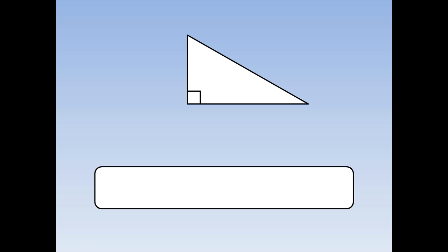Now let's look at different parts of a triangle. The length along the bottom is called the base. How tall it is is called the height. Notice that the base and the height are at right angles to each other, or perpendicular.